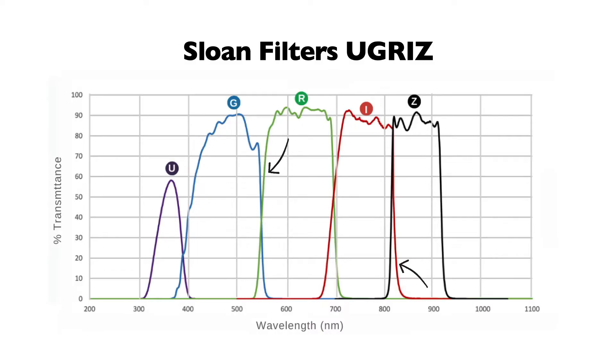There are also the Sloan filters. These are very much like the Cron and John filters, except the crossover between the bands is limited, so you have steeper edges between those bands to create some distinction between those color bands. Those type distinctions separate the Sloans from the Cron and John type filters for whatever your application may be.